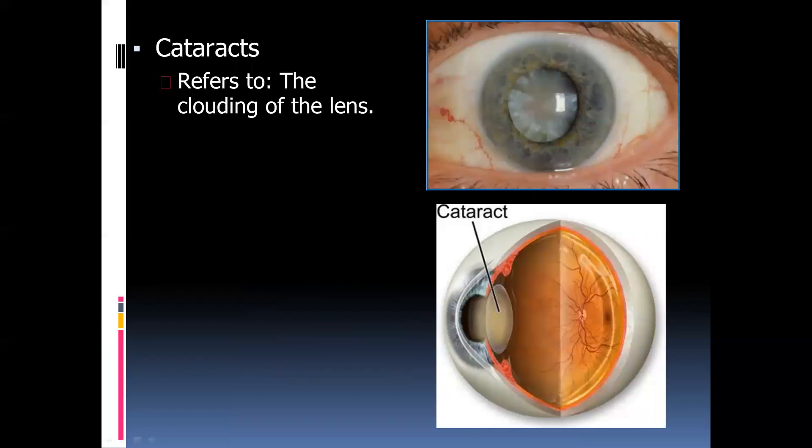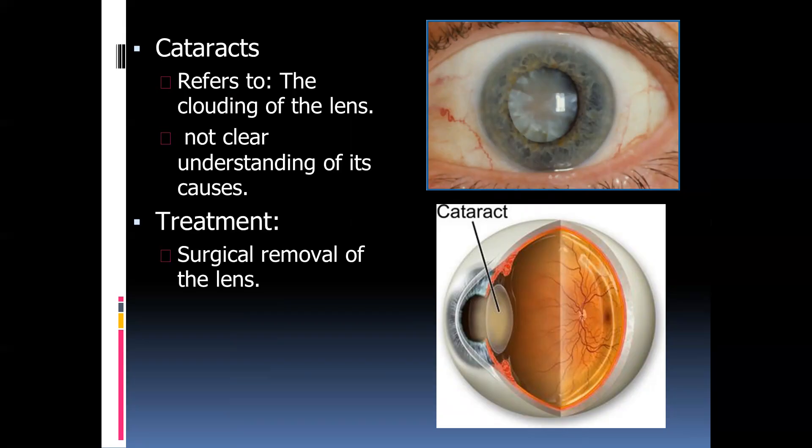The last disorder we'll refer to is cataracts. Cataracts refers to the clouding of the lens. Instead of the lens being its normal transparent color, the lens becomes a cloudy, milky color. The exact reason for this is not definitive. The treatment involves surgical removal of the lens. An operation will occur where they'll cut and remove this old cloudy lens and replace it with a synthetic lens, which will have the characteristics of the original lens.